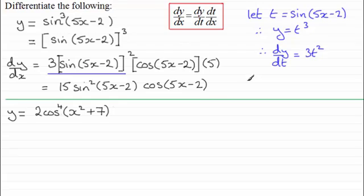Let's take this next one. y equals 2 cos⁴(x²+7). How do we do this one? What I want to think of is that this is the same as 2 times all of the cosine of x²+7, and that is all to the power 4.